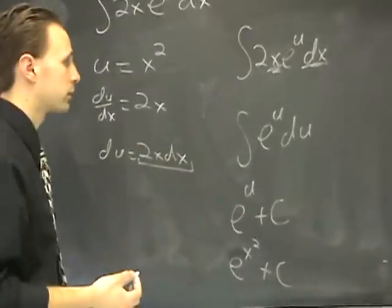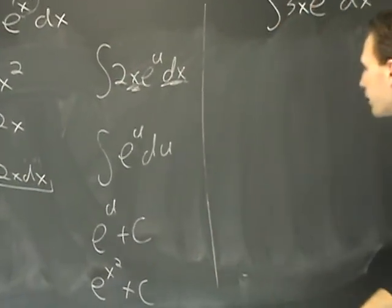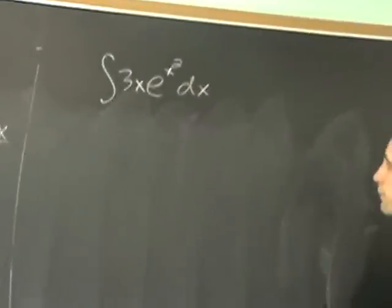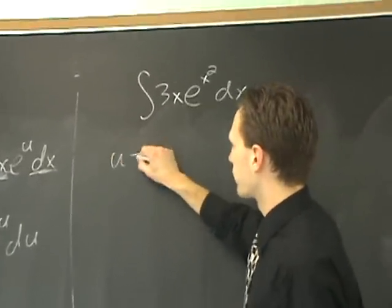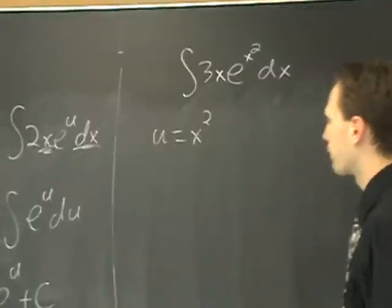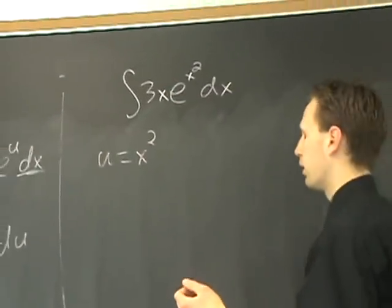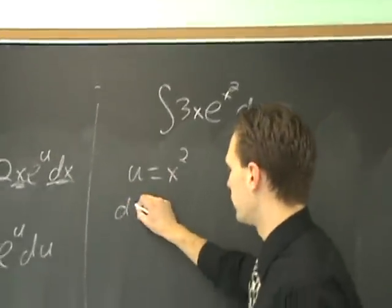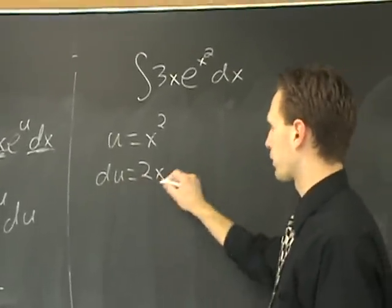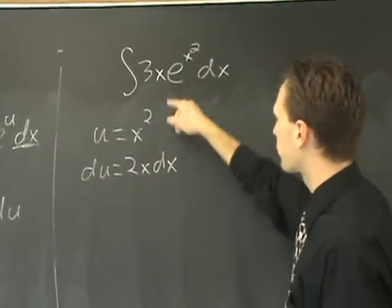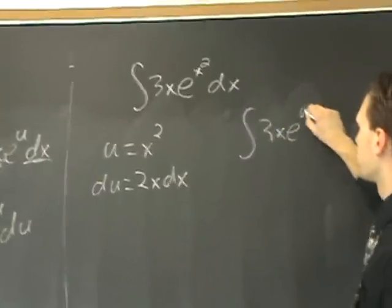Now this is going to take some practice, and it doesn't have to be perfect. I'll take a similar problem here. The x squared as u also works for this problem — u equals x squared — even though the derivative of x squared is 2x, not 3x, this can still be applied. Because du equals 2x dx. When you temporarily rewrite it, you'll have the integral of 3x e to the u dx.